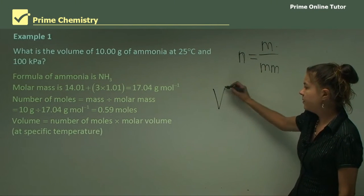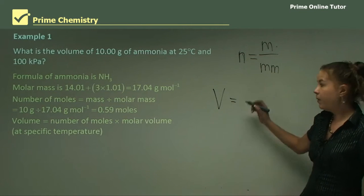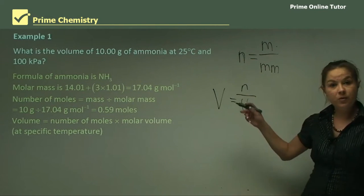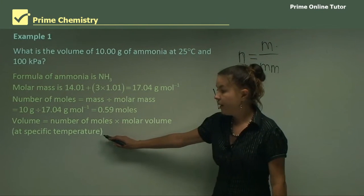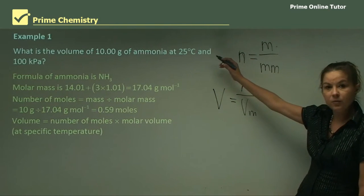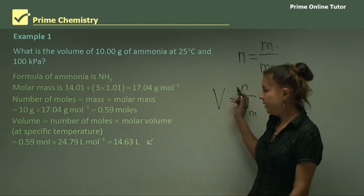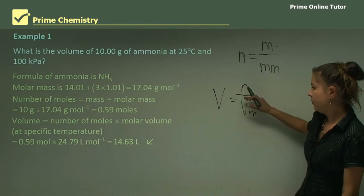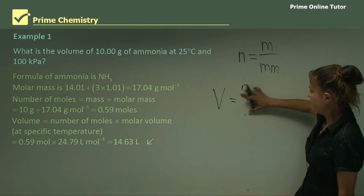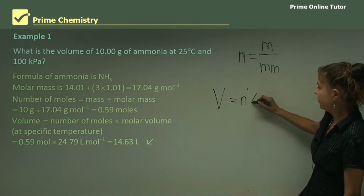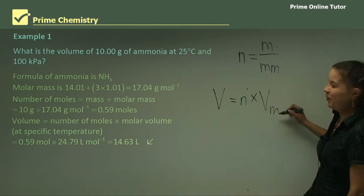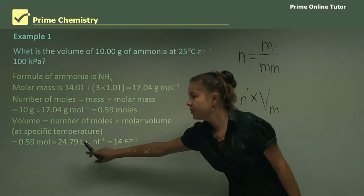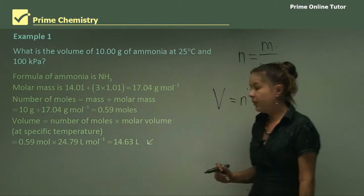And our second equation is volume, V, equals the number of moles, n, times the molar volume, Vm, which were those two numbers that I showed you earlier. So at a specific temperature, which we've been given as 25. So the volume is the moles, 0.59 times... I've written this wrong. It should be moles times the molar volume. So 0.59 times our constant, 24.79, and our answer is going to be 14.63 liters.